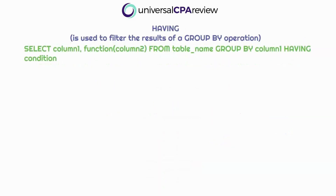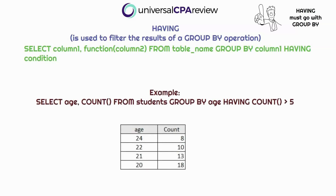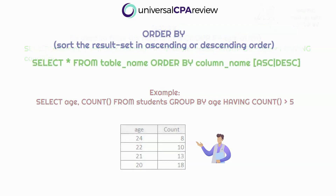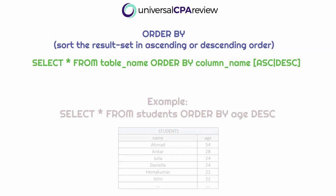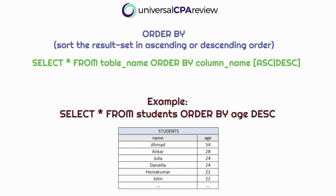Next we have the HAVING clause, used to filter the results of a GROUP BY operation. It's similar to WHERE but operates on grouped data — just remember HAVING goes with GROUP BY. For instance, the command on screen would only show ages that appear more than five times in the students table, filtering out the rest. Finally, the ORDER BY clause sorts the result set in ascending or descending order — ASC or DESC. The command on screen returns all students sorted by age in descending order.